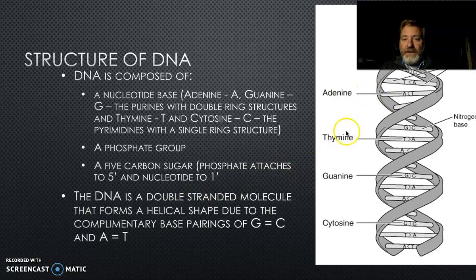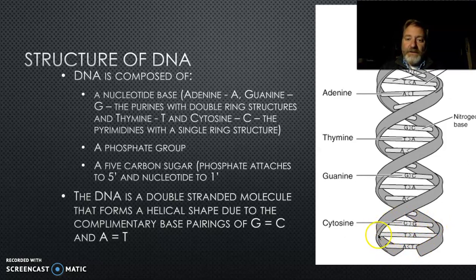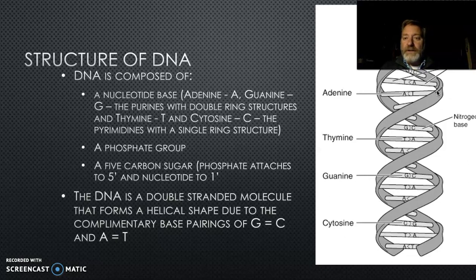These are the nucleotides: adenine, thymine, guanine, and cytosine. Thymine always joins with adenine, and guanine always joins with cytosine — so you have a C on one side and a G on the other. Around the outside of the helix is the sugar-phosphate backbone — deoxyribose, the sugar, with a phosphate backbone. This is deoxyribose nucleic acid — DNA.